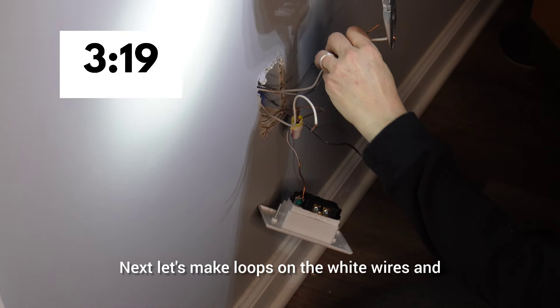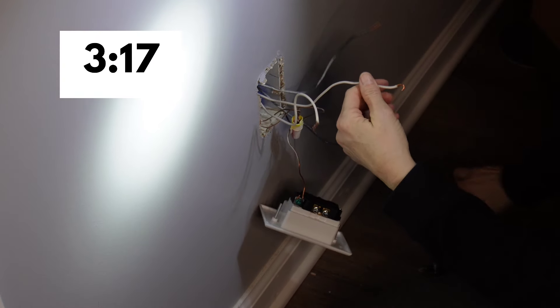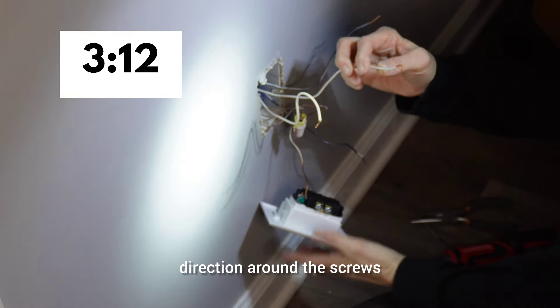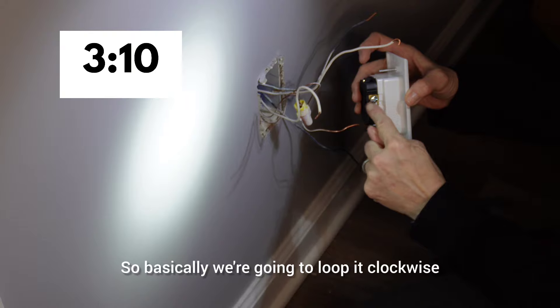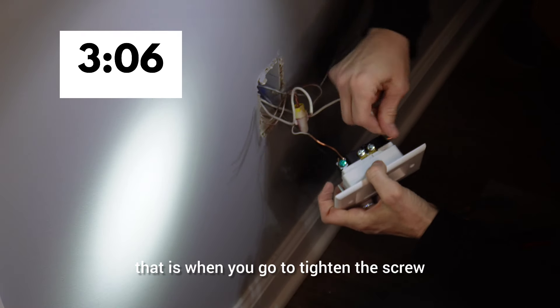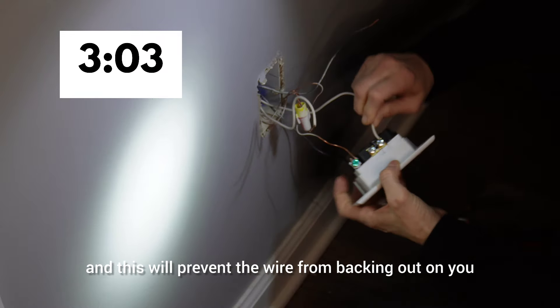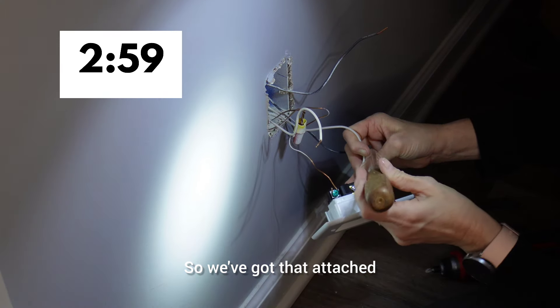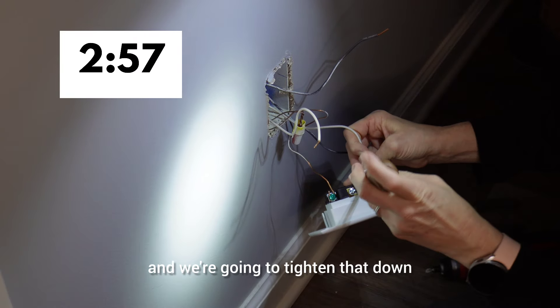Next, let's make loops on the white wires. Now, I do want to point out that you want to make the loops in a clockwise direction around the screws. So basically, we're going to loop it clockwise around the screw. And the reason for that is when you go to tighten the screw, you're going to tighten it clockwise. And this will prevent the wire from backing out on you. So we've got that attached, we're going to take a screwdriver, we're going to tighten that down.